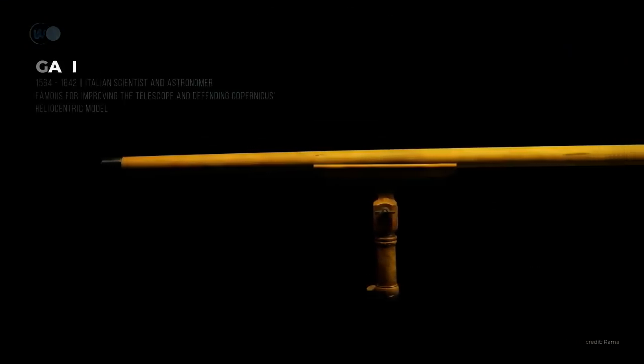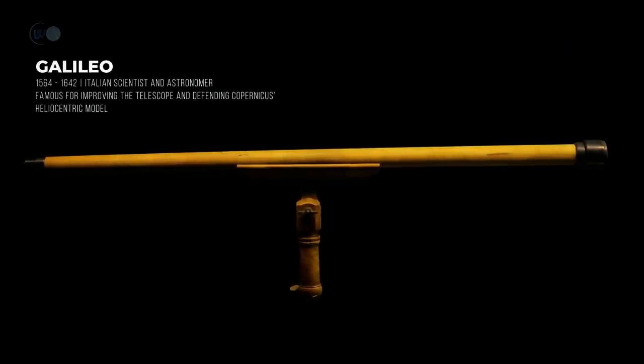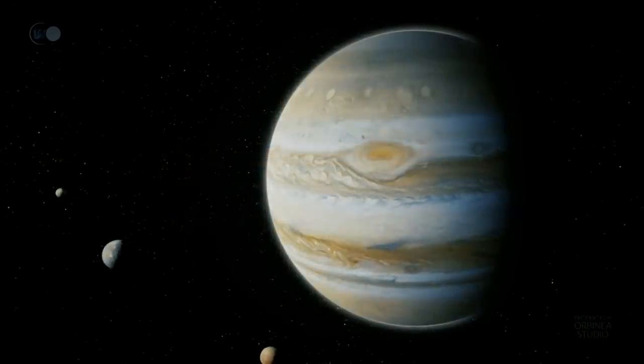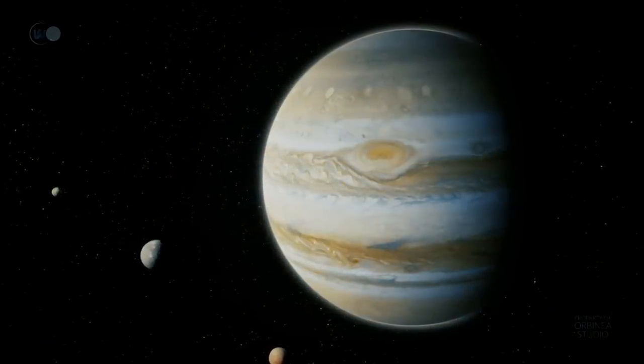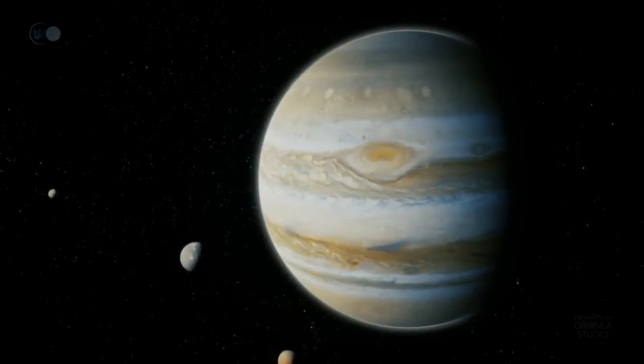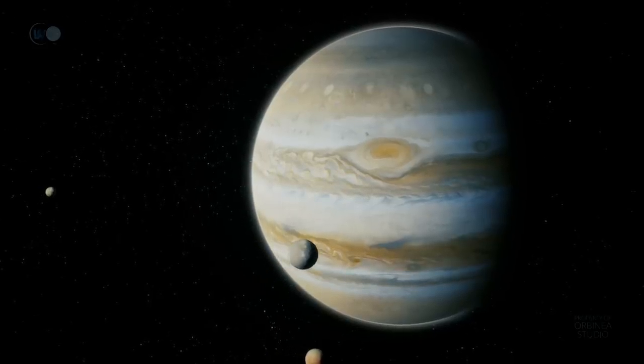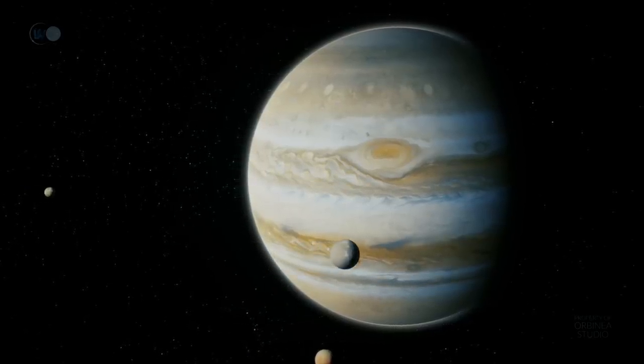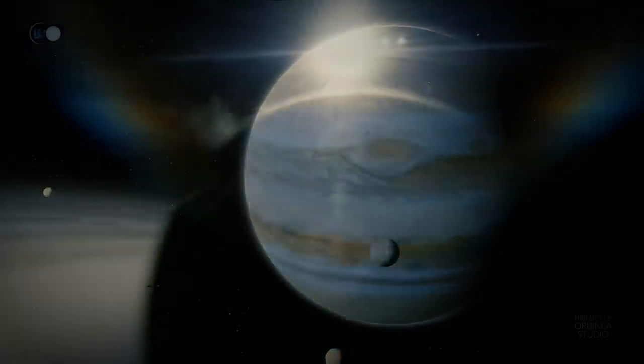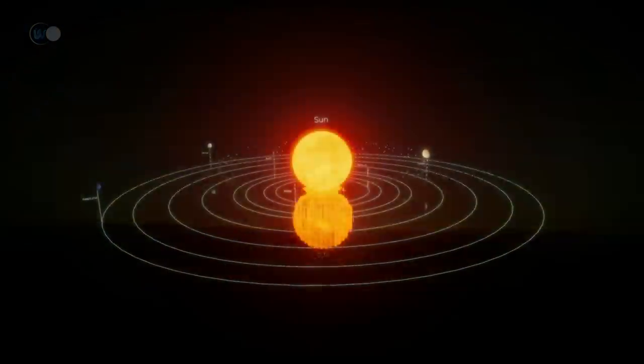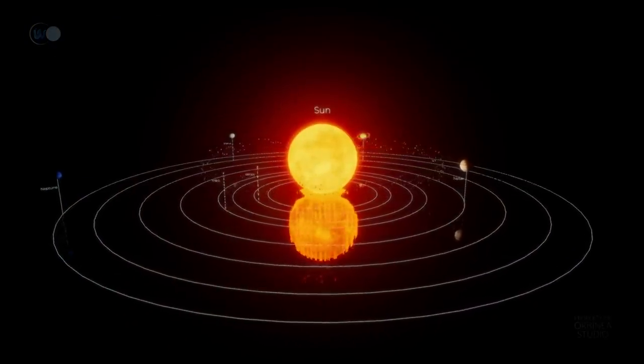Later, Galileo made a revolutionary discovery thanks to a new invention, the telescope. While observing Jupiter, he discovered that the planet was surrounded by four stars. He soon deduced that these were in fact four moons orbiting the same planet. Copernicus' theory proved to be correct. The Earth is not the center of the universe, and the planets belonging to this system do indeed revolve around the Sun.